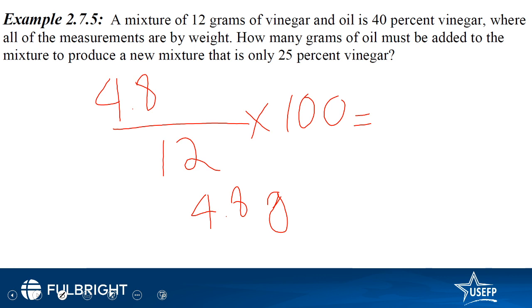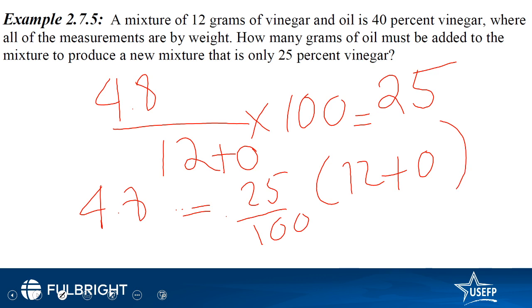So 4.8 divided by 12 into 100 would be 40%. However we want to reduce the percentage of vinegar to 25% which means we need to add oil to it. So if we add oil, let's say this is O, 12 plus O comes in the denominator and the mass of vinegar remains the same, 4.8, and the new percentage is 25. So 25 divided by 100 equals 4.8 over 12 plus O. So 25 divided by this comes out to be 4.